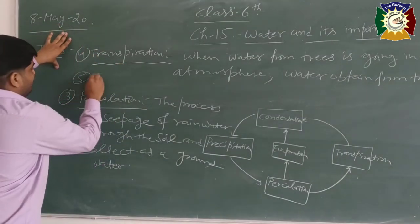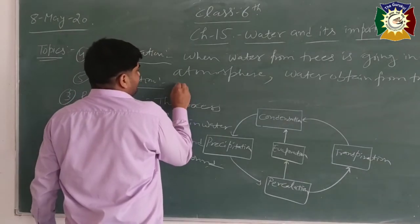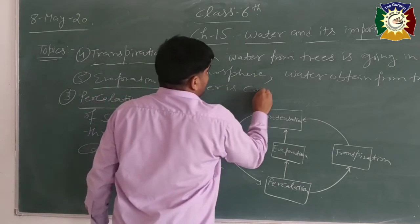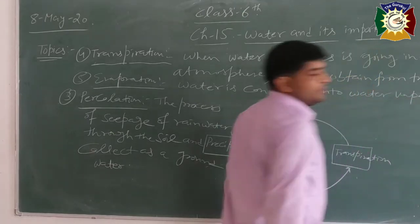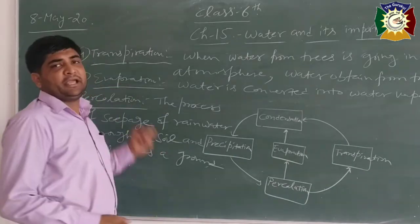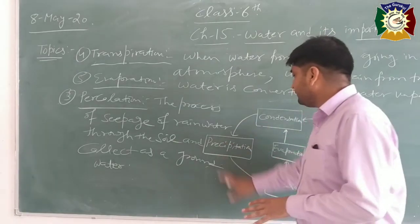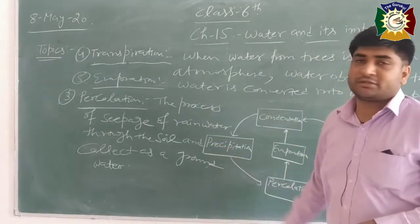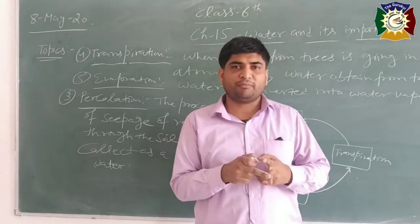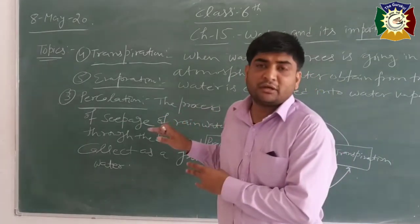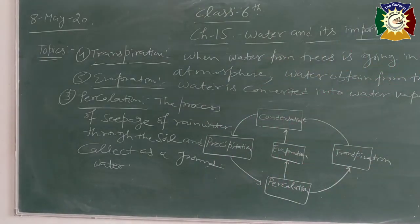The last process is evaporation. In evaporation, water is converted into water vapour. These are the five processes involved in the water cycle that complete the whole cycle. Today I have discussed cloud formation, the mechanism of rain, hail and snow, and the water cycle. Thank you.